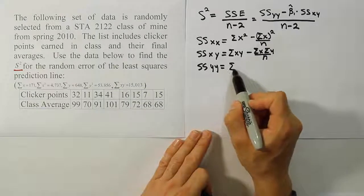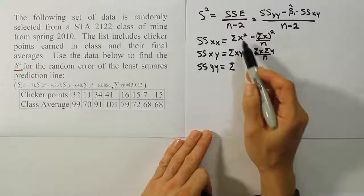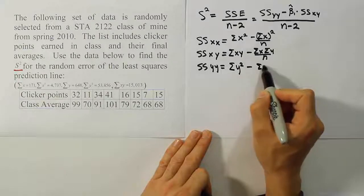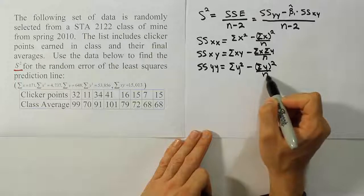And then this following one will be just like the one above for the X squared but you substitute all the X's for Y. So the sum of the Y squared value minus the sum of Y quantity squared over N.